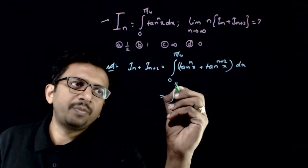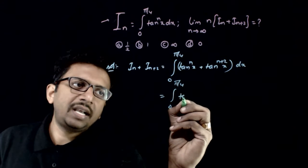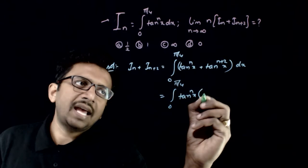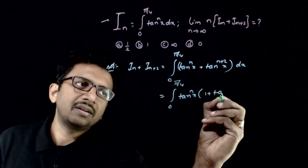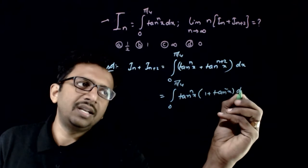That is equal to the integration from 0 to pi by 4 of tan to the power nx times 1 plus tan square x dx.